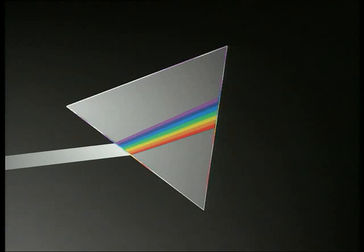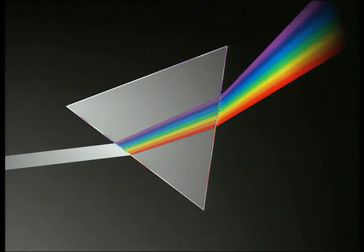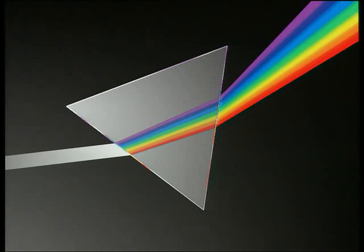The prism makes the beam of light change direction. Different colored light is bent by different amounts. Violet is bent the most, while red is bent the least. White light is a mixture of many colors which the prism separates out.